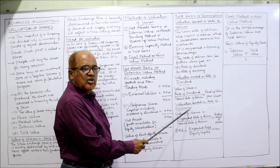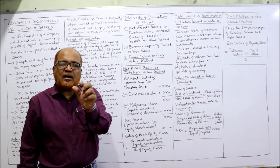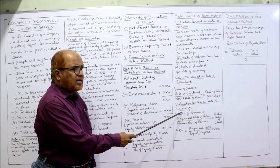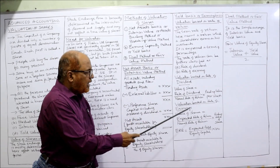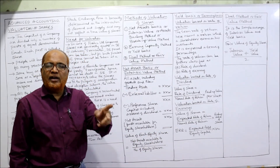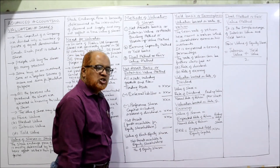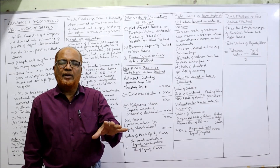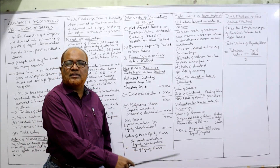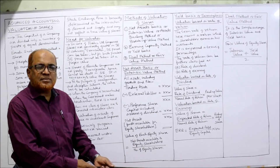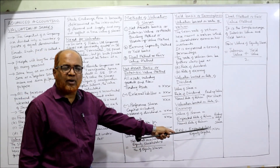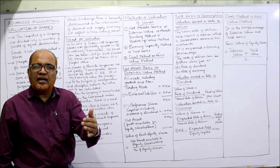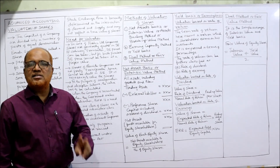For the rate of earning method: Value of share = (Expected rate of return ÷ Normal rate of return) × Paid-up value per share. The difference from the dividend method is in the numerator — here we use expected rate of return instead of rate of dividend; denominator and paid-up value remain the same. If the problem gives rate of earnings, apply this formula; if rate of dividend is given, apply the first. Expected rate of return (ERR) = (Expected profit ÷ Equity capital) × 100.